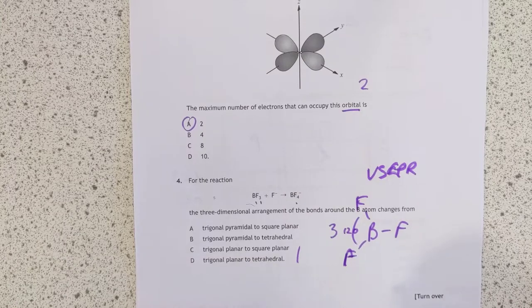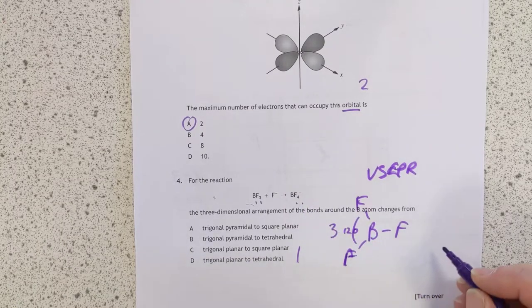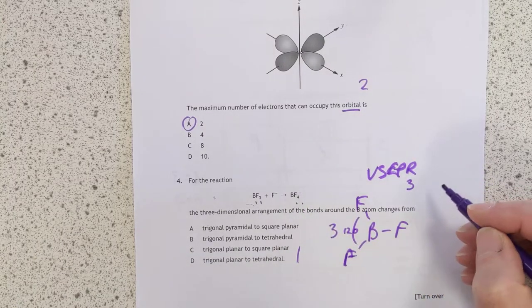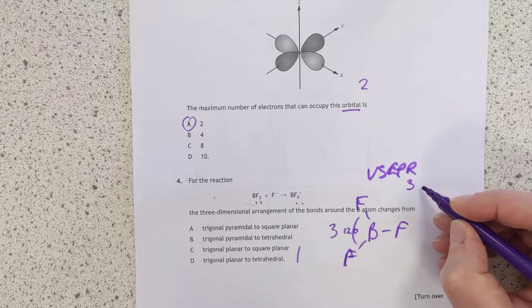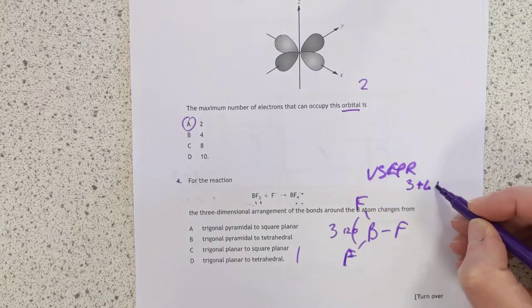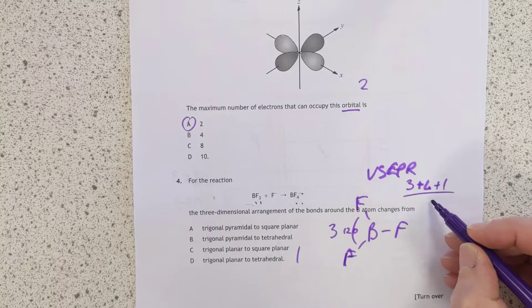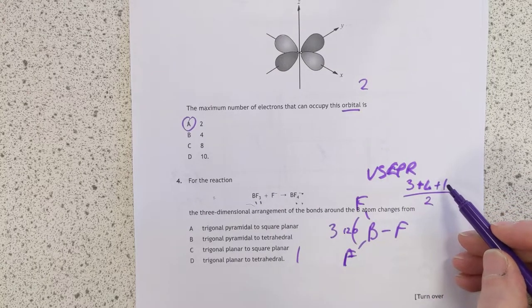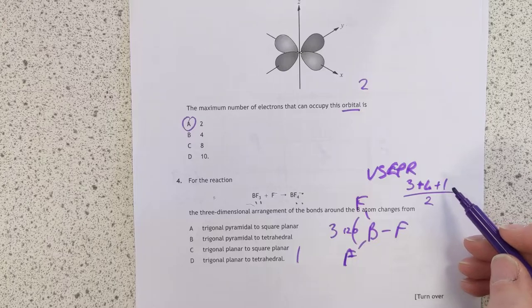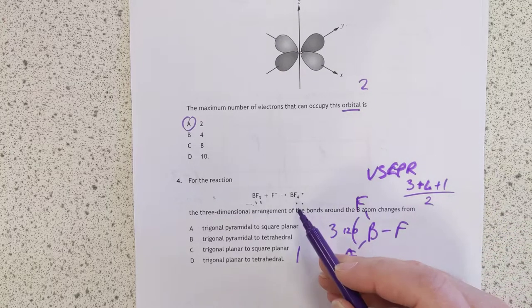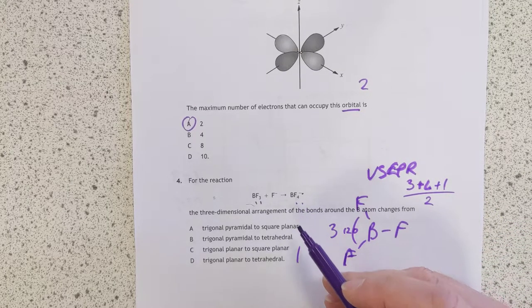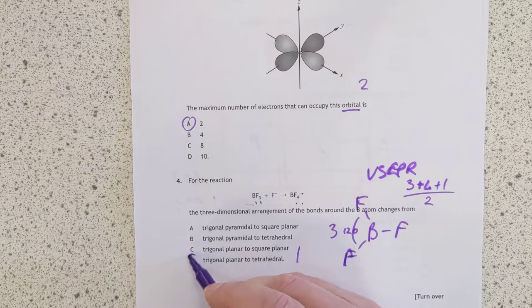Does that help us? Sort of. Narrows it down to these. BF4 minus still three outer electrons. Now you've attached four things to it, and you've got an extra charge, a negative charge, so we need to add another one on. That's eight pairs of electrons, only, sorry, four pairs of electrons, and all four of them, in fact, are involved in bonding, because there's four Fs. So that is the tetrahedral, which means the answer's D.